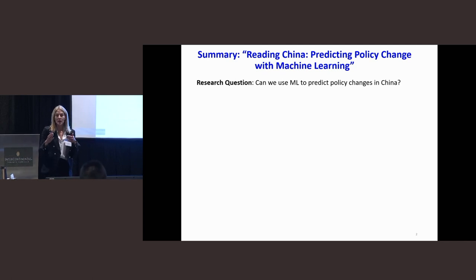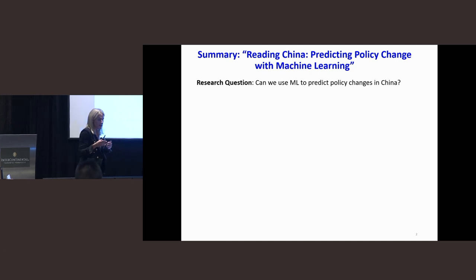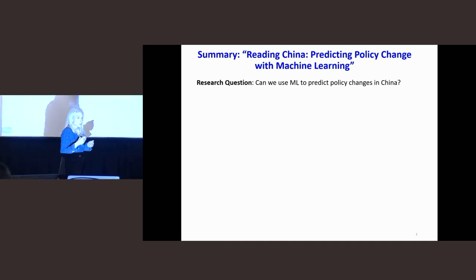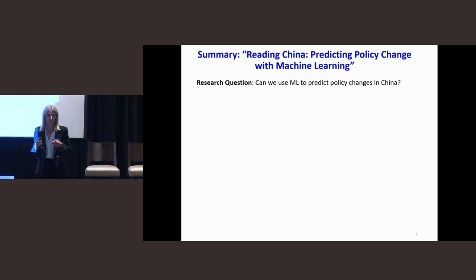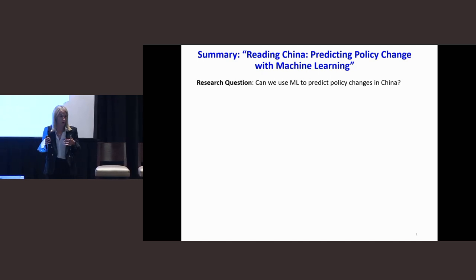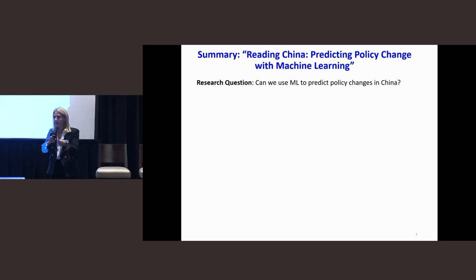So then they said, we know that new policies are led by sort of propaganda around that policy in the newspaper, and so if we can predict the content of the newspaper, we can then identify new policies. But it turns out it's also really hard to predict what's going to be in the newspaper. So instead, they come up with this very clever trick, which is let's not predict what's going to be on the front page.